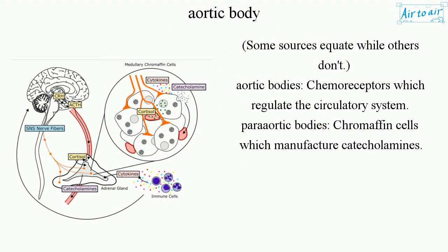Some sources equate while others don't: aortic bodies are chemoreceptors which regulate the circulatory system, while para-aortic bodies are chromaffin cells which manufacture catecholamines.